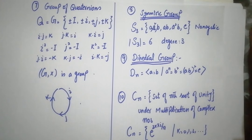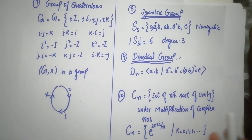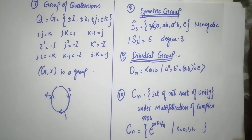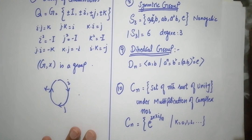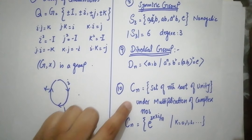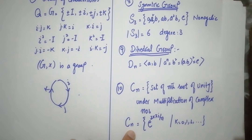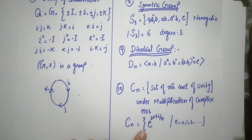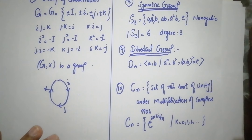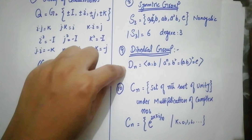The dihedral groups are a family of groups; changing the subscript gives different dihedral groups. In the 10th example, you have the group of nth roots of unity under multiplication. N here represents positive integers. The nth roots of unity form a group under multiplication. The symmetric group is also under multiplication. These are the main groups in our course.